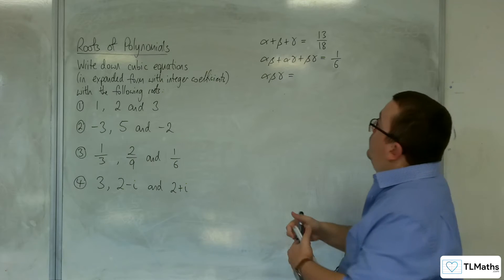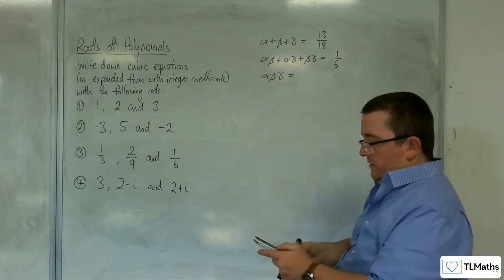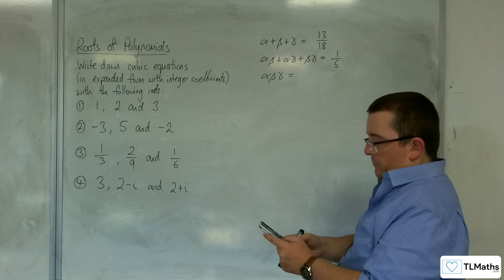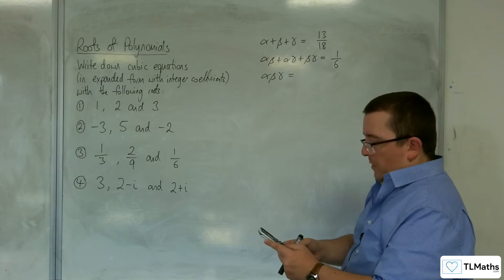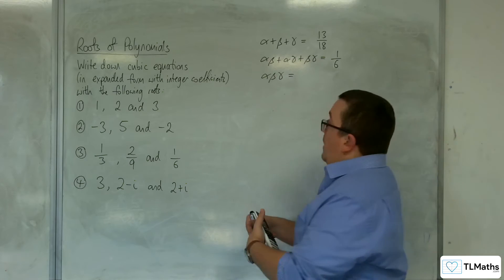Then finally, we've got the product of the three, so 1/3 times by 2/9 times 1/6, and we get 1 over 81.